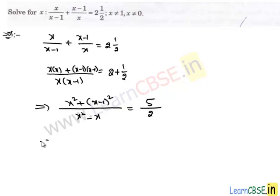Now we simplify the numerator. Here x square plus x minus 1 whole square is x square minus 2x plus 1, and in denominator we have x square minus x, which is equal to 5 upon 2.